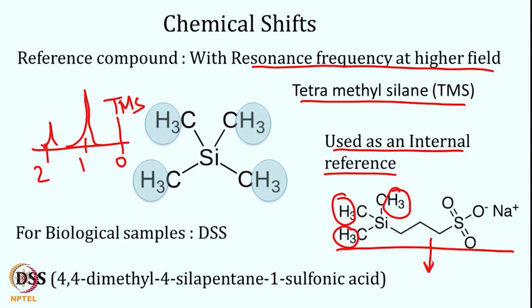In many cases, if the reference compound interacts with the experimental compound, external referencing is used. This means recording one experiment with only the reference compound, and then recording the compound of interest separately in the same solvent, same buffer, and same pH. The signal from TMS or DSS is kept at 0 PPM and all other frequencies are expressed as differences from that. This is the distinction between internal and external referencing.